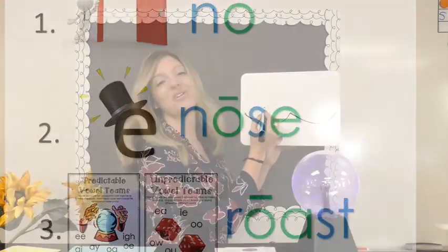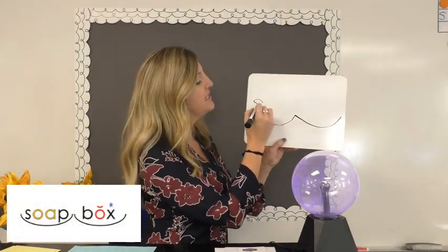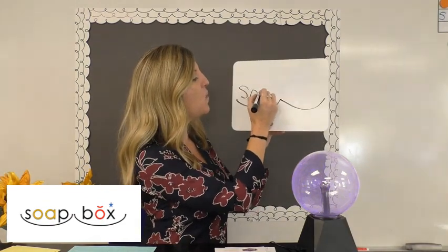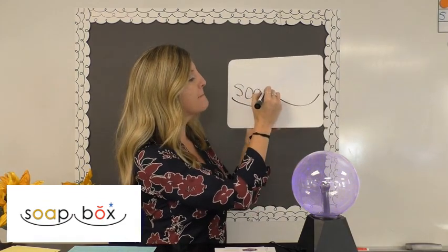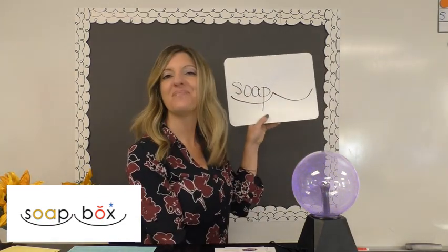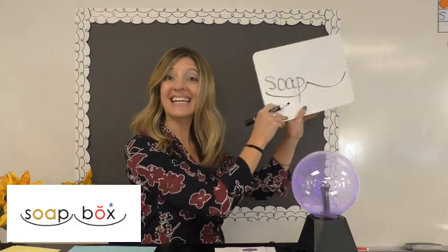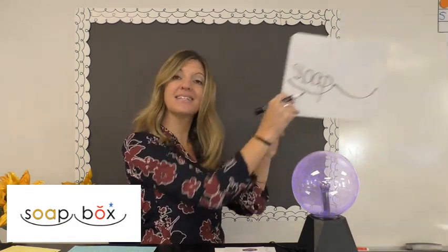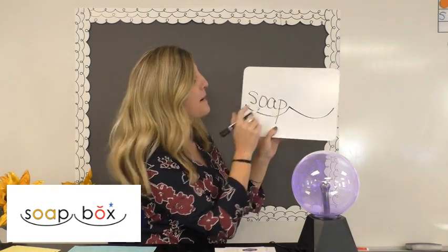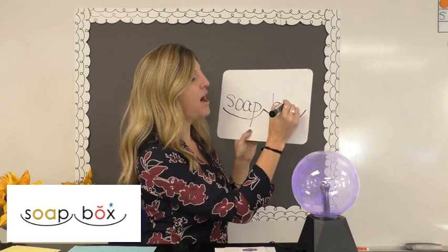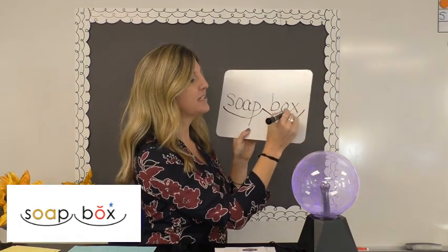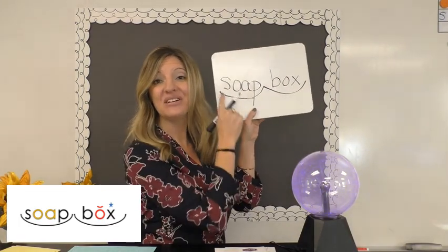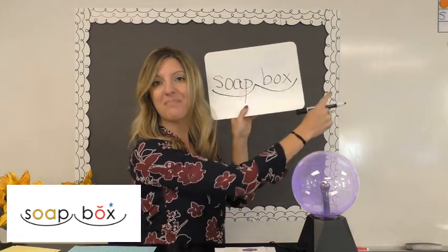Let's try again. Soap: S-OA-P. I use OA to make the long O. My second syllable is 'box' — tap out the sounds: B-O-X. My word is 'soapbox.'